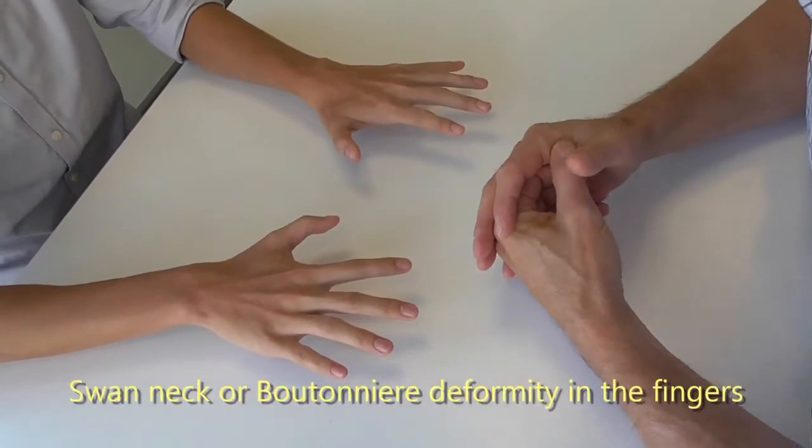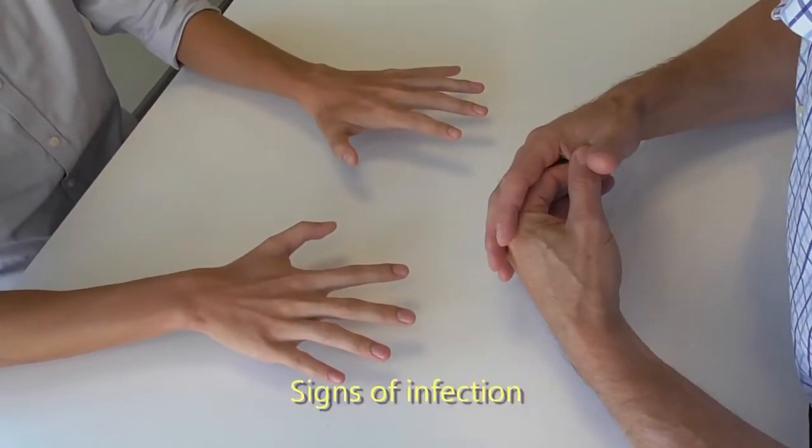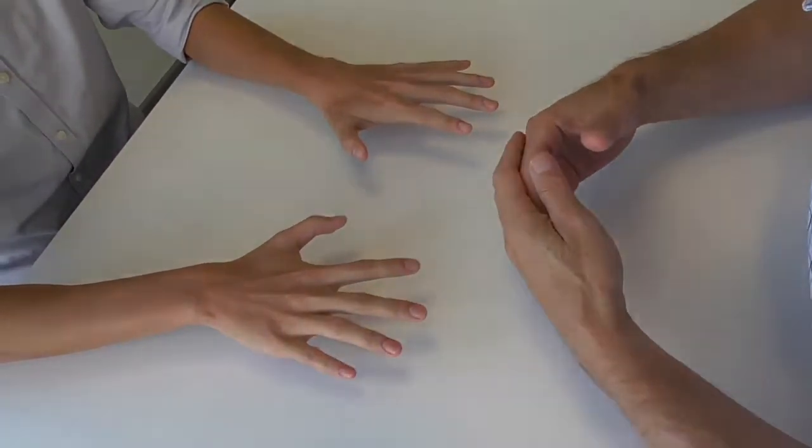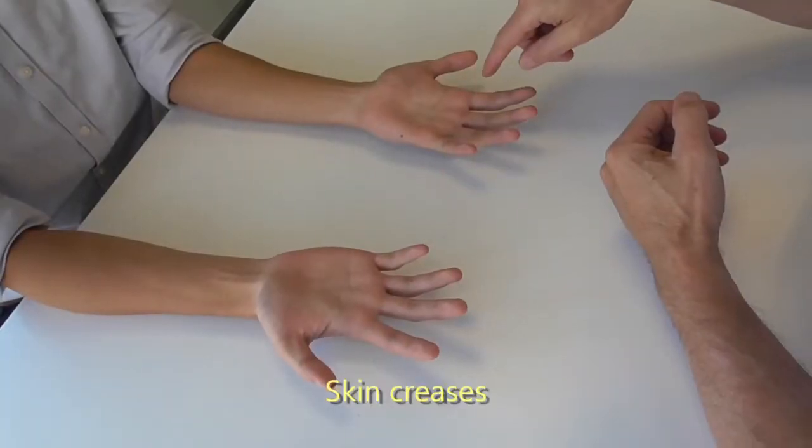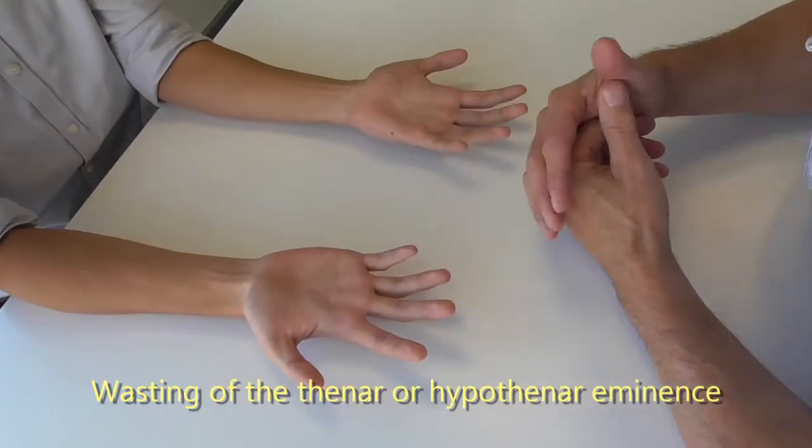There's no obvious swan neck deformity or boutonniere deformity in the fingers, and there's no obvious signs of infection. Normal skin creases all the way through. No swelling, no wasting of the thenar eminence or the hypothenar eminence.